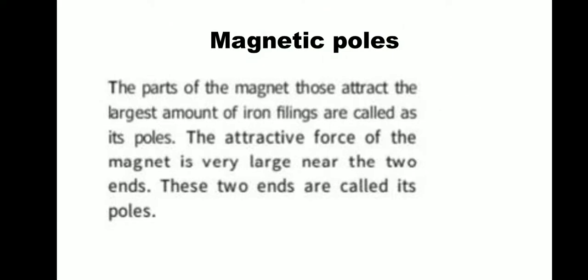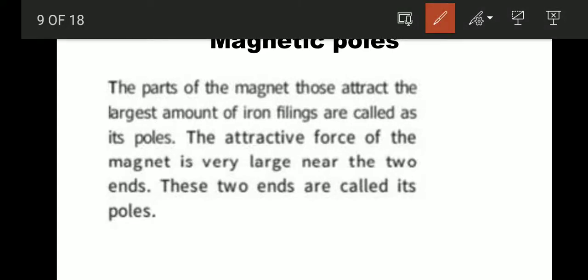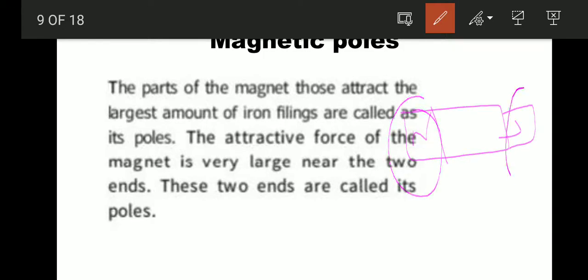Magnetic poles. The parts of the magnet that attract the largest amount of iron filings are called poles. The attractive force of the magnet is very large near the two ends. These two ends are called poles — for example, North and South. The two ends are called poles.